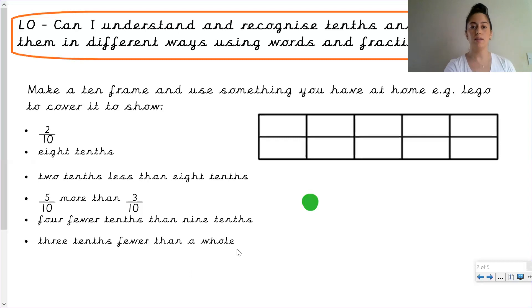Okay so it says make a ten frame which we have and use something you have at home for example Lego to cover it to show two tenths. We already know it's a ten frame because my denominator shows that the whole is divided into ten equal parts. How many parts of it do I need to consider? Two, one, two. So that shows me two tenths because two parts of the whole are covered, are shaded, are considered.